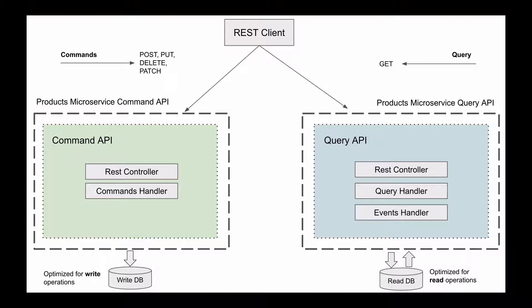When a client application needs to request some information from our products microservice, the request will be routed to the query-side microservice, which will accept HTTP GET requests, query the read database, and return the requested information. The database of this microservice can be optimized for read operations, and this makes our architecture even more flexible. If our microservice receives a lot of read operations, we can optimize its database for read operations and start more instances of the query microservice to service many read HTTP requests.